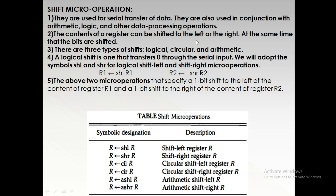The contents of a register can be shifted to the left or to the right. While shifting the data within or outside the register, it may transfer towards the left or to the right. There are three types of shifts: logical shift, circular shift, and arithmetic shift.